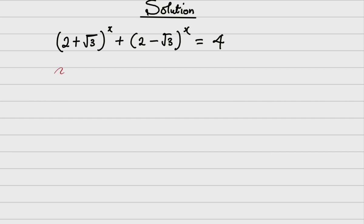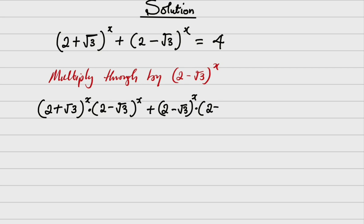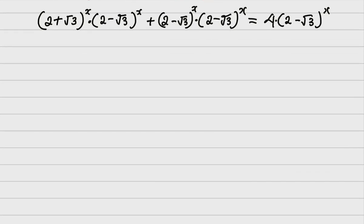The first thing I need to do is multiply through by (2 minus root of 3) raised to power x. I'll tell you why. You can actually multiply by (2 plus root of 3) raised to power x — it is still okay — but I chose (2 minus root of 3) raised to power x. So multiplying through, I'm going to have (2 plus root of 3)^x multiplied by (2 minus root of 3)^x, plus (2 minus root of 3)^x multiplied by (2 minus root of 3)^x, equals 4 multiplied by (2 minus root of 3)^x.